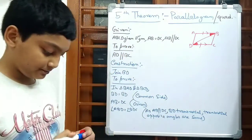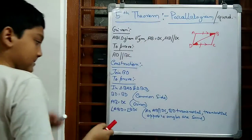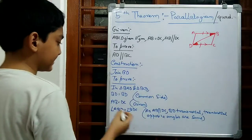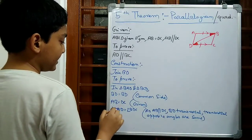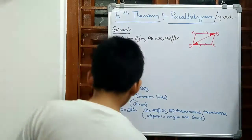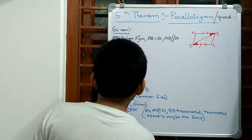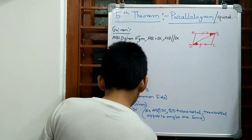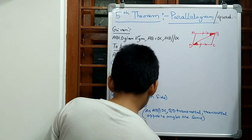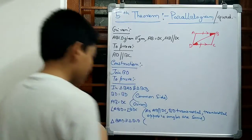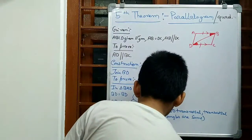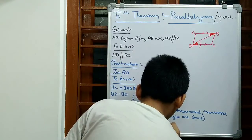So this gives us side, angle, side. Therefore triangle BAD is congruent to triangle BCD by SAS congruence.